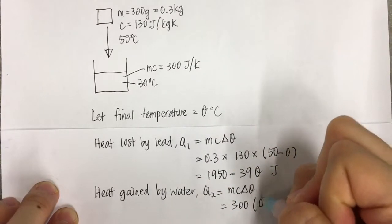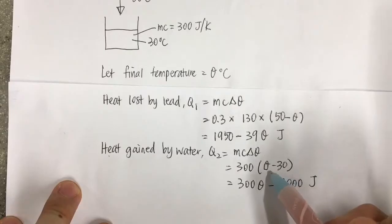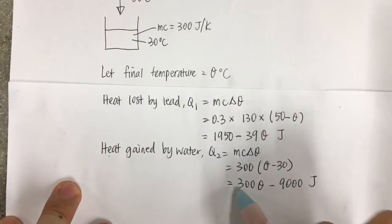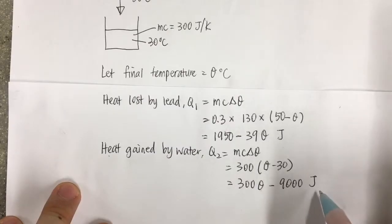Delta theta will be θ minus 30 because the final temperature is θ, equals 300θ minus 9000 J.